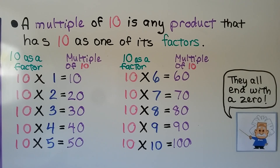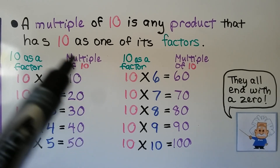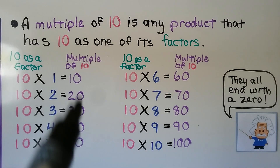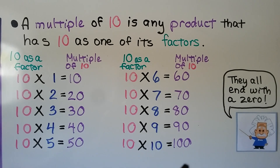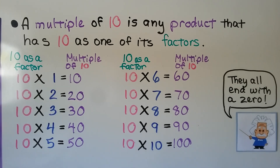A multiple of 10 is any product that has 10 as one of its factors. We have 10 as a factor in all of these, and each of these products is a multiple of 10. Every single product here is a multiple of 10 because it has 10 as a factor. Do you notice they all end with a 0? Do you see another pattern? 10 times 1, the product is a 1 with a 0. 10 times 2, the product is a 2 with a 0. 10 times 3 is a 3 with a 0.